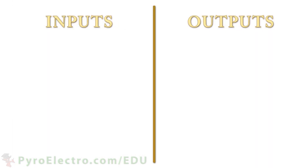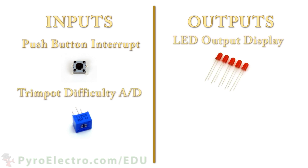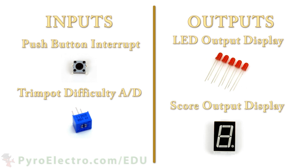For our game, we will use a push button interrupt as input along with the trim pot input for selecting difficulty. Then five LEDs and a seven segment display will be used to show output. The five LEDs should light up one at a time, back and forth. The goal of the game is to press the push button when the middle LED is lit up. Then the score display will increment by one. Changing the trim pot input should make the LEDs move faster back and forth, changing the difficulty of the game.